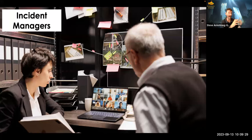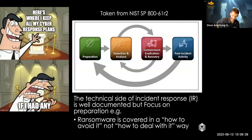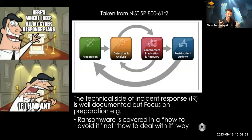If you have technical people writing an IR plan, they'll write it for themselves. So you probably need a separate plan for incident management. You might then say, 'Let's look at what guidelines are out there' — but it's not great pickings. The most commonly referenced document is the NIST SP 800-61 R2, which is about 70 pages long covering the various stages of incident response.